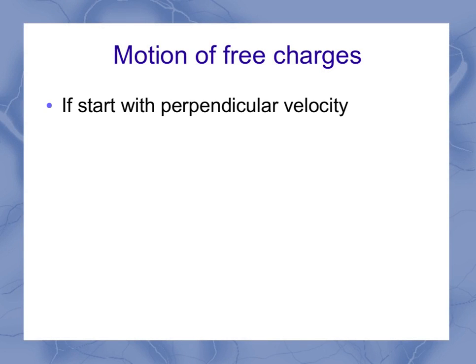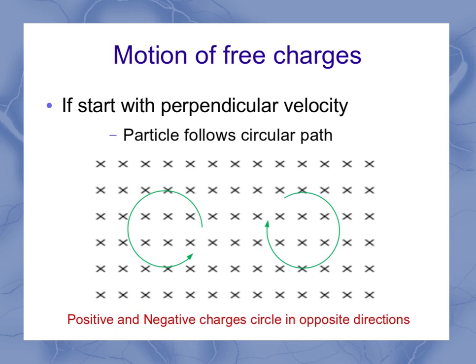So to summarize, if I start out with a velocity which is perpendicular to the magnetic field, I have a particle which follows a circular path. And electrons and protons are both going to follow circular paths, positive and negative charges, but they're going to circle in opposite directions. And you'll be able to use your right hand rule for any particular case to figure out which way it should go, clockwise or counterclockwise.